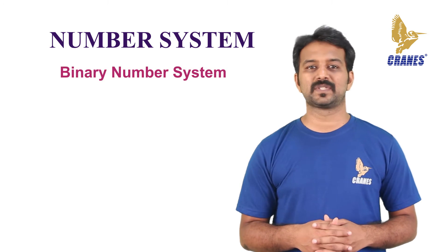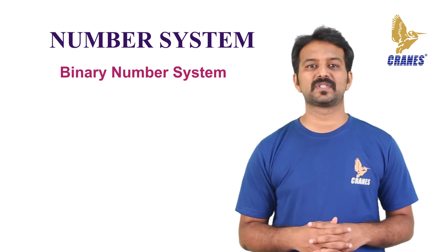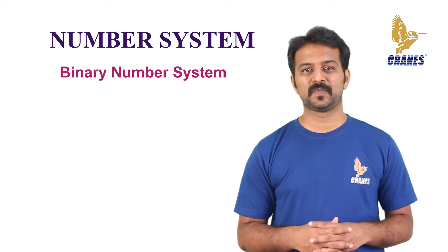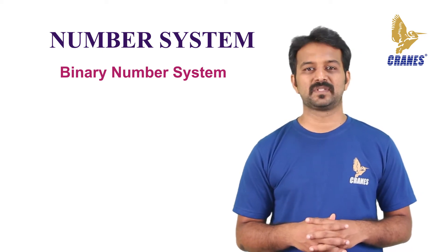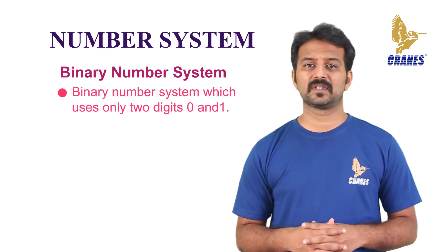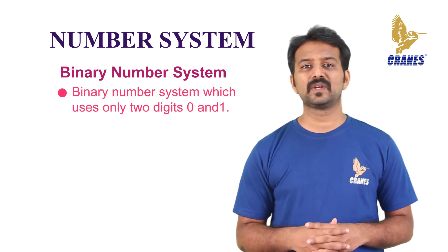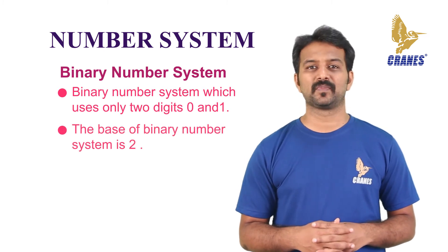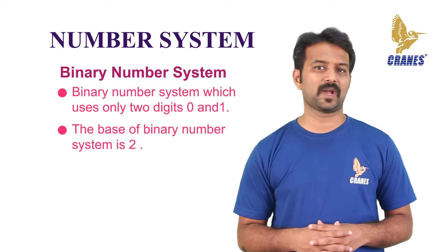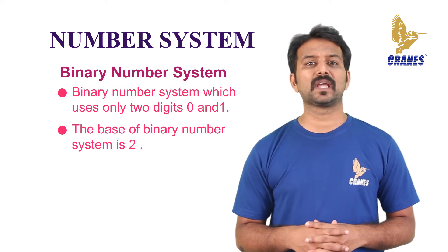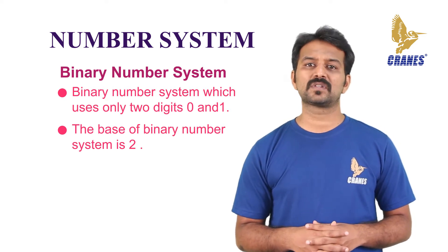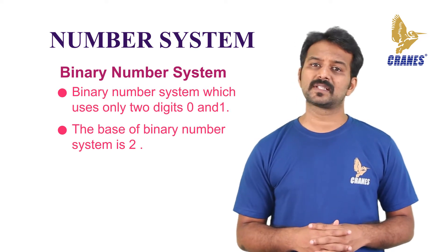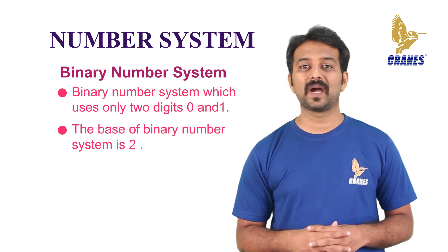Modern computers do not process decimal numbers. They work with the binary number system, which uses only two digits — 0 and 1. The base of the binary system is 2. Digital electronic equipment works on the binary number system, and hence decimal numbers are converted into binary.